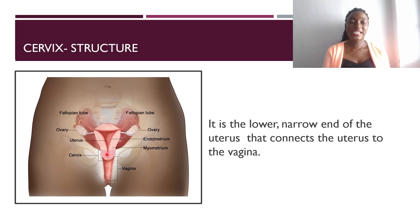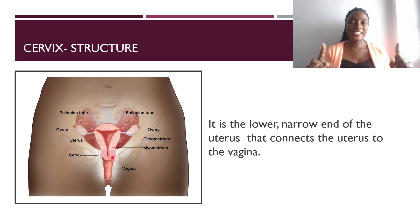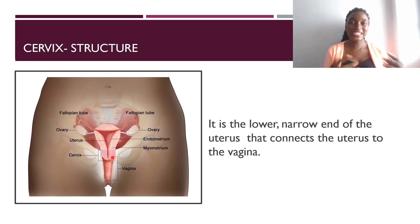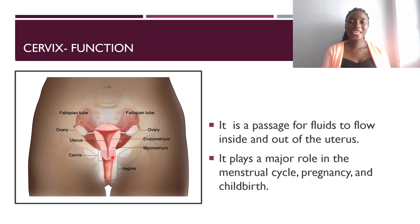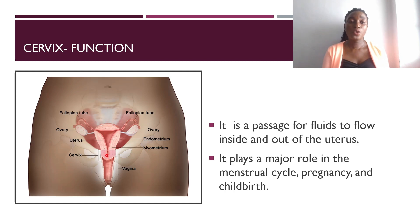The cervix is part of the uterus and is the connection between the uterus and the vagina. It plays a major role during childbirth — it dilates to allow the baby to pass through. When a pregnant woman is in labor, dilation is measured from two centimeters up to ten centimeters, referring to the opening of the cervix. It is a passage for fluids: semen (containing sperm) flows in during sexual intercourse, while menstrual blood, the egg cell, or other discharge flows out. The cervix also plays a major role in the menstrual cycle, pregnancy, and childbirth.